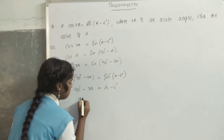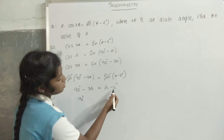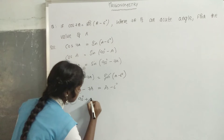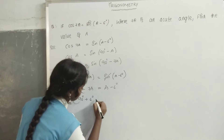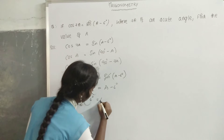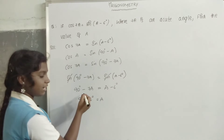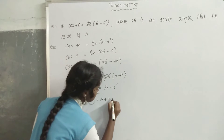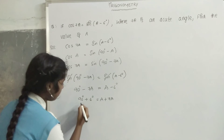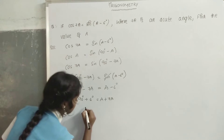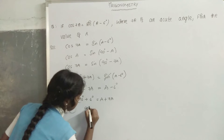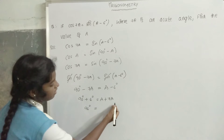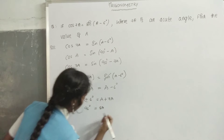90 degrees. Transpose minus 6 to the left hand side, then it becomes plus 6 degrees is equal to a. Transpose minus 7a to the right hand side, then it becomes plus 7a. 90 degrees plus 6 degrees, that is 96 degrees, is equal to a plus 7a, that is 8a.